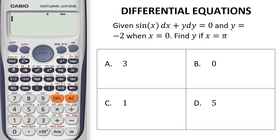Given sine of x dx plus y dy equals 0, and y is equal to negative 2 when x is 0. Find y if x equals pi.